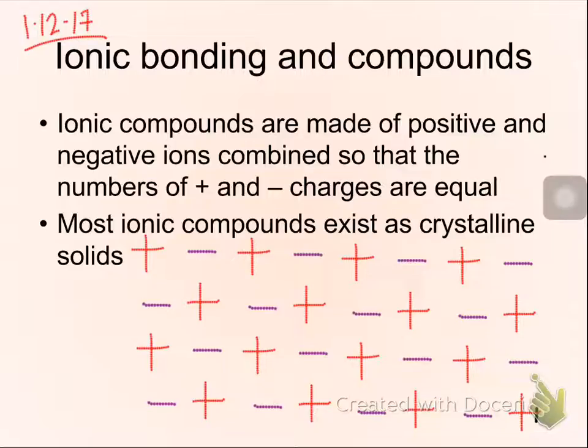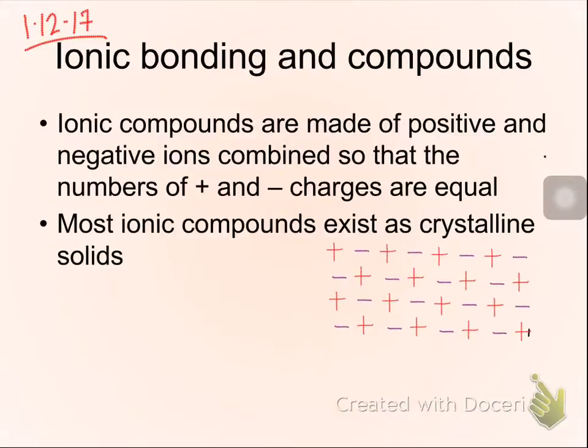What I'm showing here is something where it's one to one. You have positive charges, negative charges, positive charges, negative charges. That's not the only possible arrangement. You can have two negatives with one two-plus. That happens quite frequently. We'll be doing formulas soon where you'll see how that happens. It's just got to be balanced. Overall, they have to add up to zero in terms of a net charge.